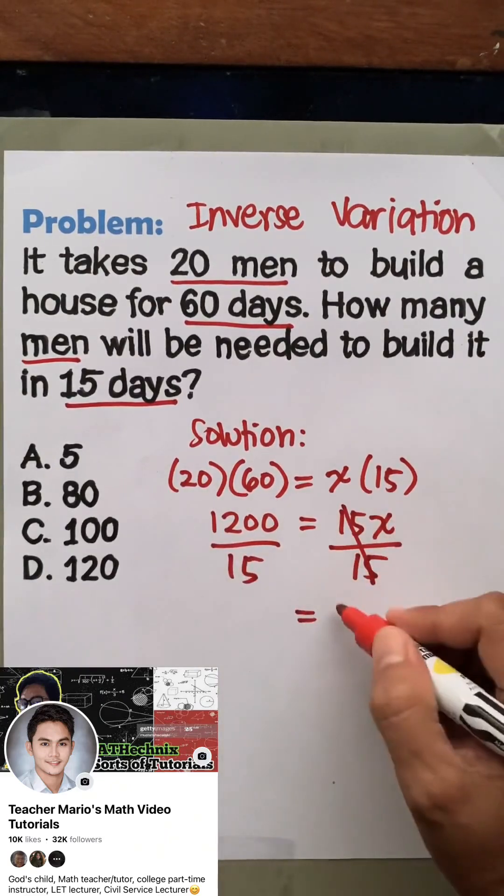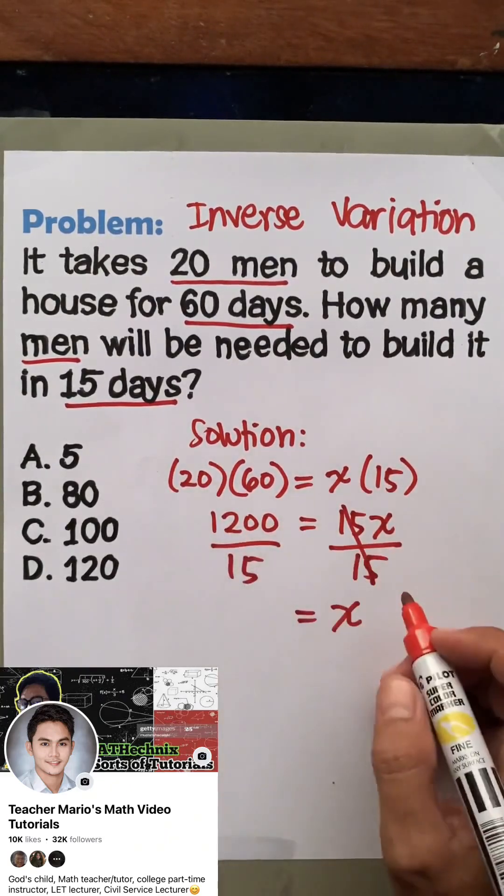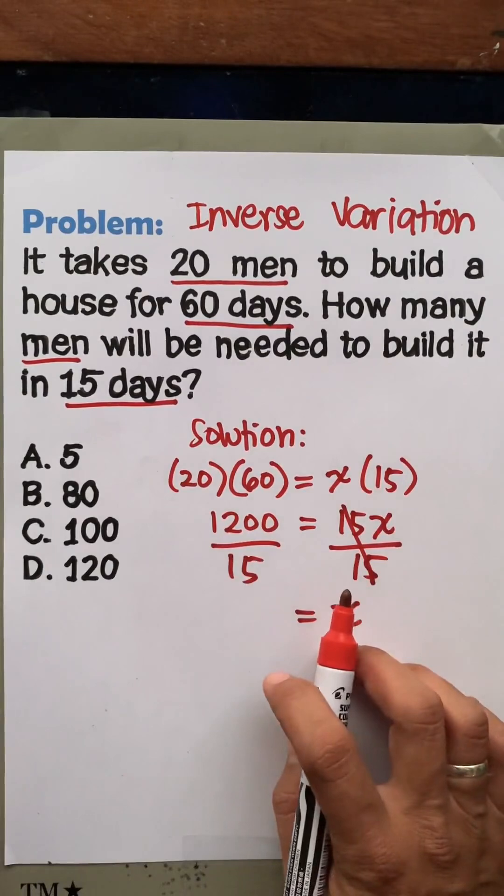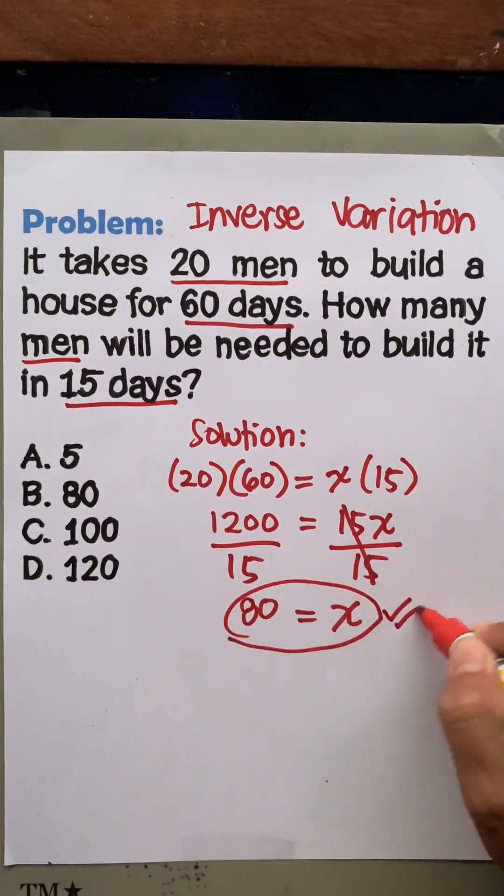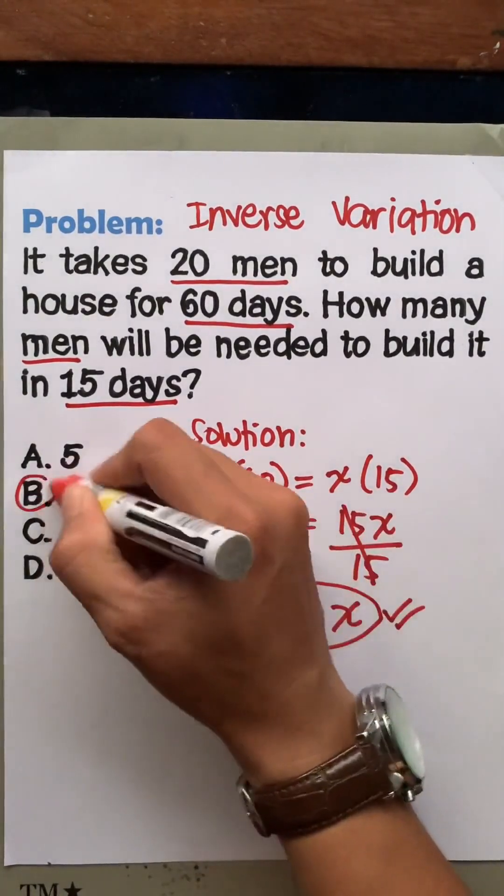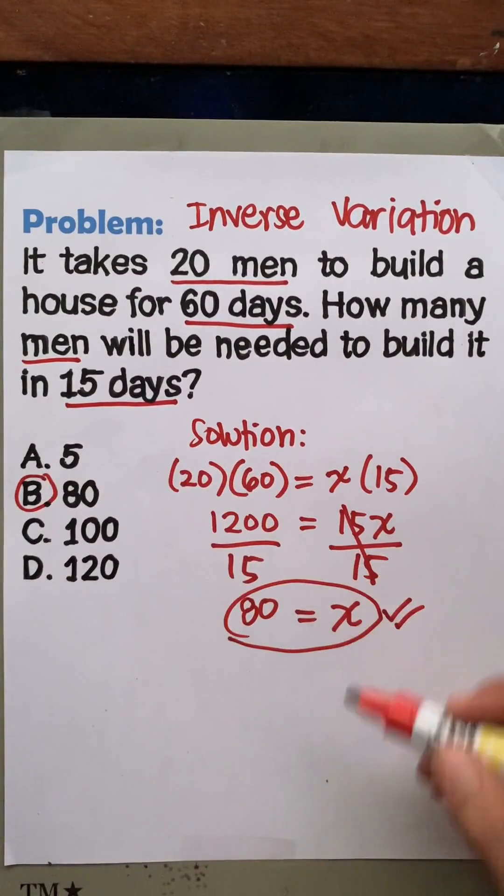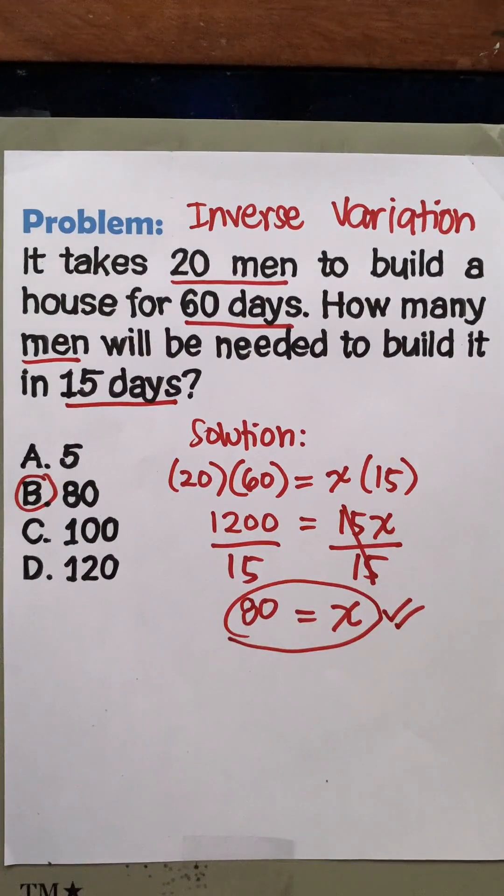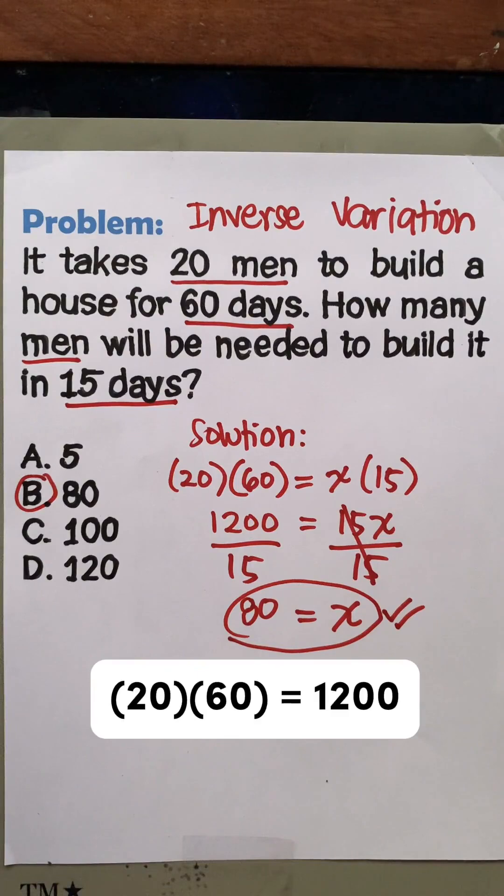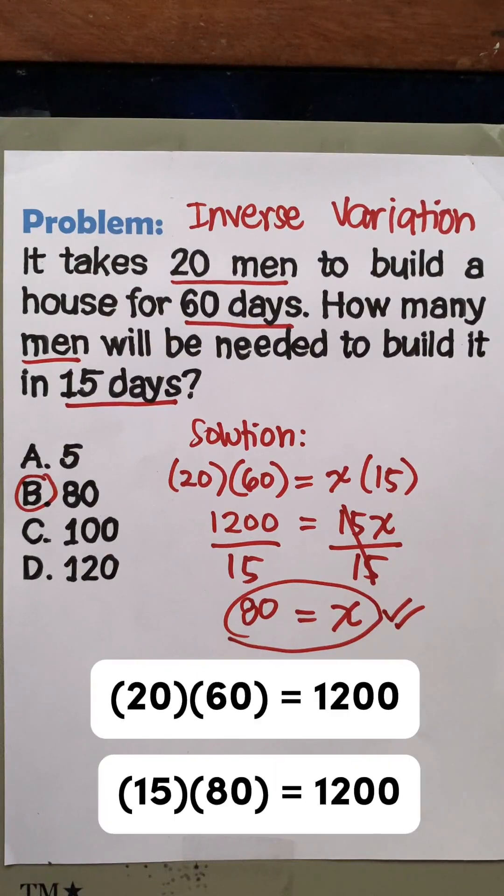This means that 80 men are needed to finish the house in 15 days. To check our work: 20 times 60 is 1200, and 80 times 15 is also 1200.